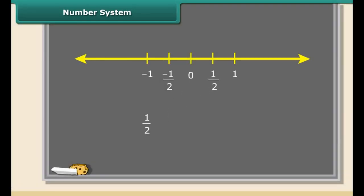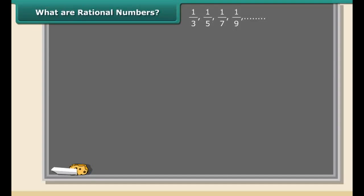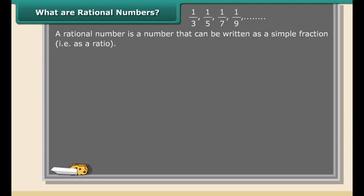What about one by two — is it a whole number, natural number, or an integer? As you can see, one by two lies between zero and one. We call it a rational number. A rational number is a number that can be written as a simple fraction, that is, as a ratio. So a rational number looks like p upon q. Remember, q cannot be equal to zero.